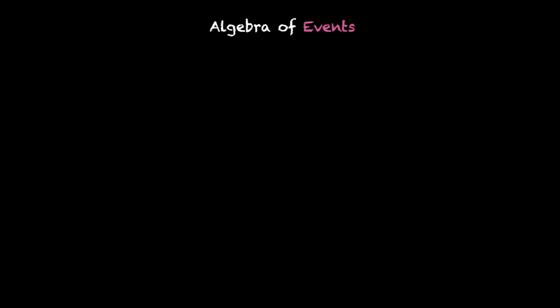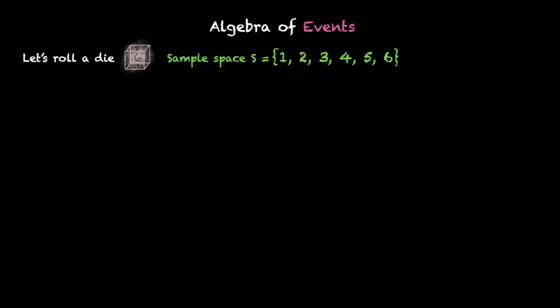Let's move on and now look at the algebra of events. So this time let's roll a die. When you roll a die, this is your sample space — you get six possible outcomes: 1, 2, 3, 4, 5 and 6. Let's look at these two events: the first event is A, which is {1 or 6}, and the second event is B, which is {3, 5 or 6}.